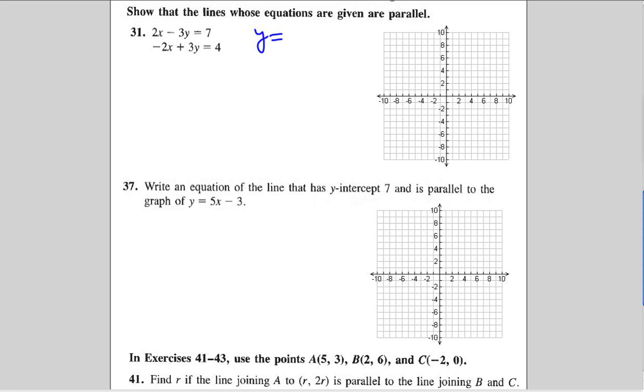The slope of a line when it's in the form y equals mx plus b is the m part, the part that's multiplied by x. And the y-intercept is the b part. So we're going to get each of these lines in y equals mx plus b form. That means we're going to get y by itself.